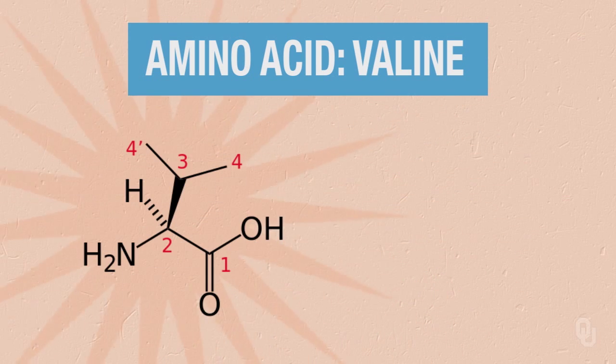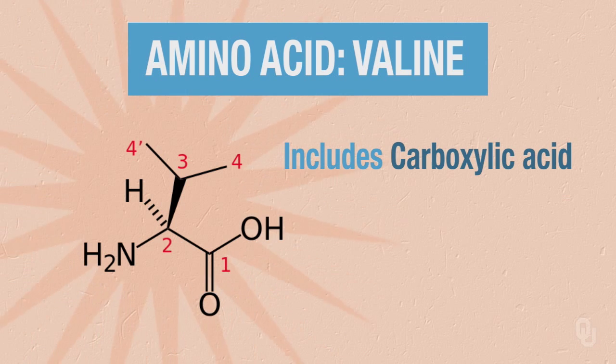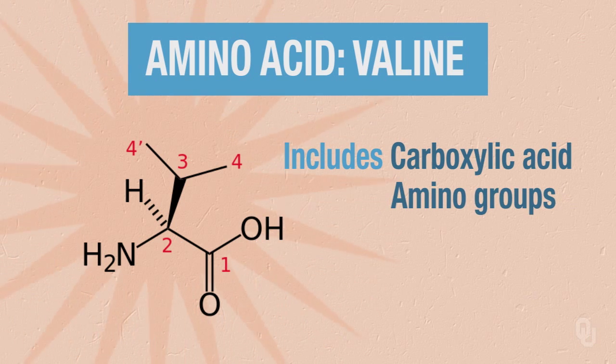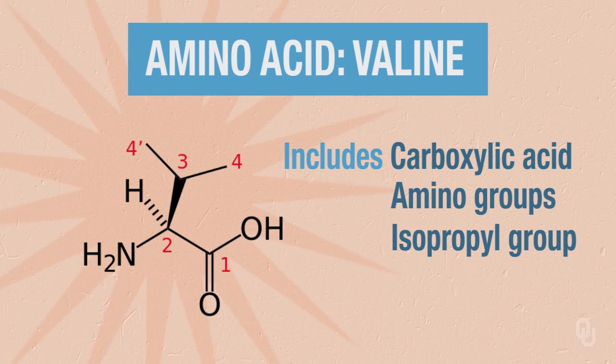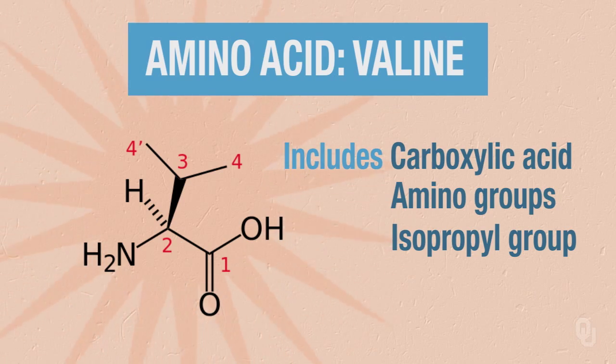— valine. Valine has our carboxylic acid, it's got our amino group, and it has this isopropyl group — this creates the amino acid. Valine is very important because it is used to eliminate diacetyl by yeast, so having the right amount of amino acids is very important.